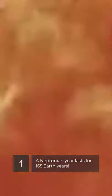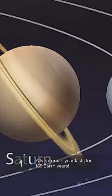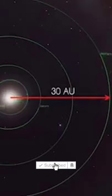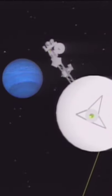Number 1. It takes Neptune 164.8 Earth years to orbit the Sun just once. This means that since its discovery in 1846, only one full Neptunian year has passed.